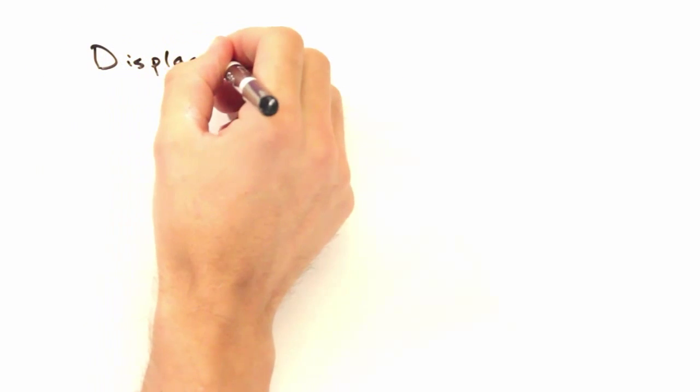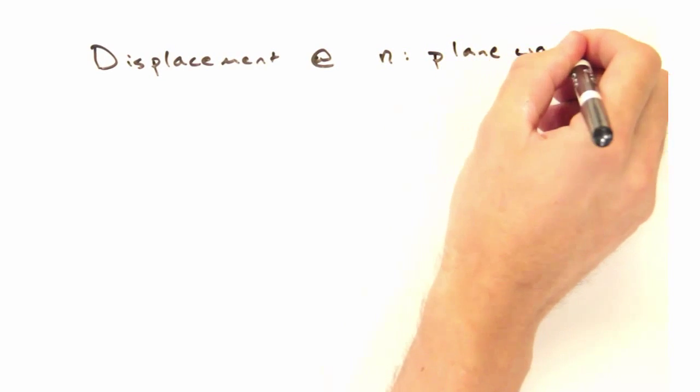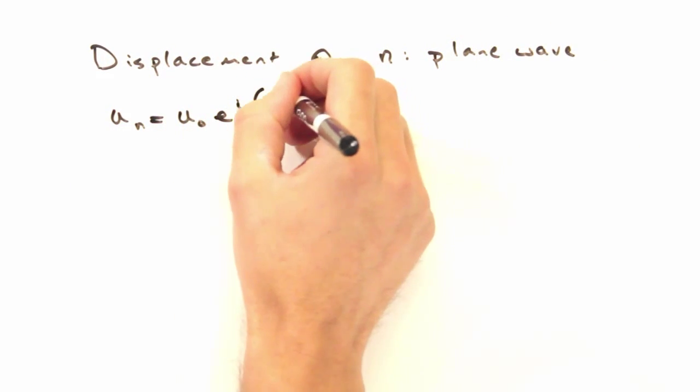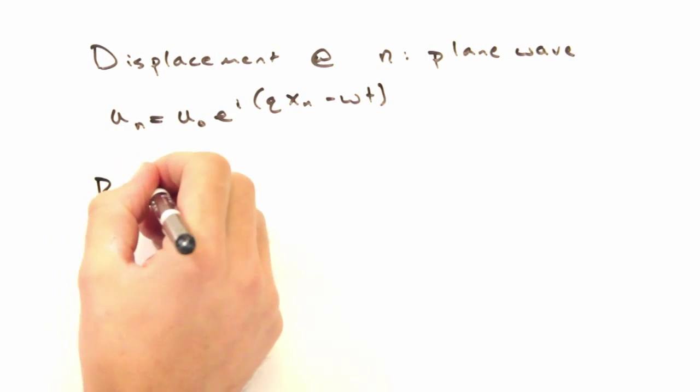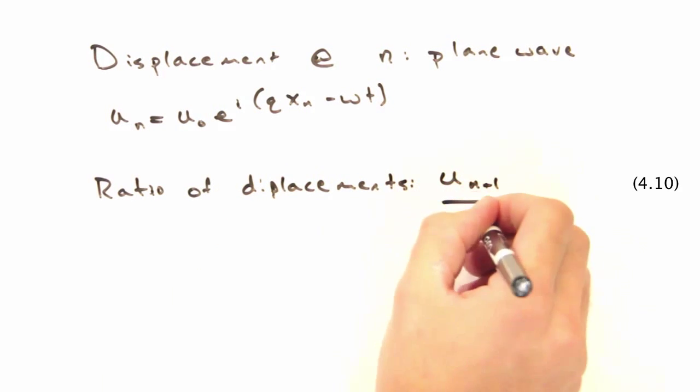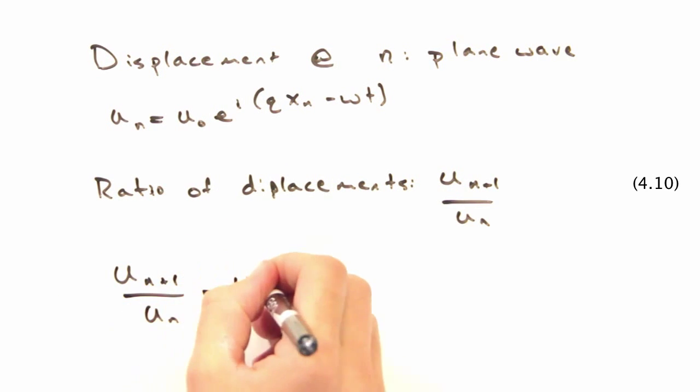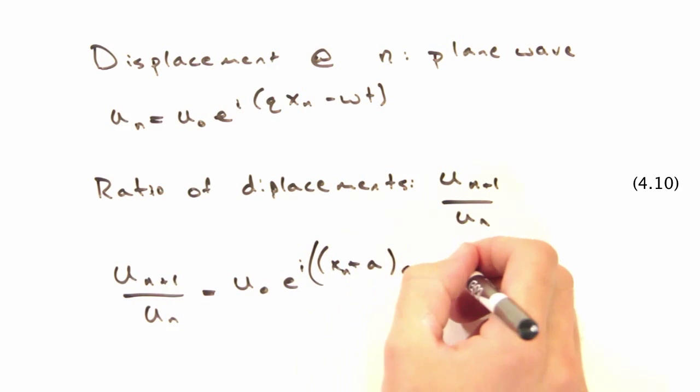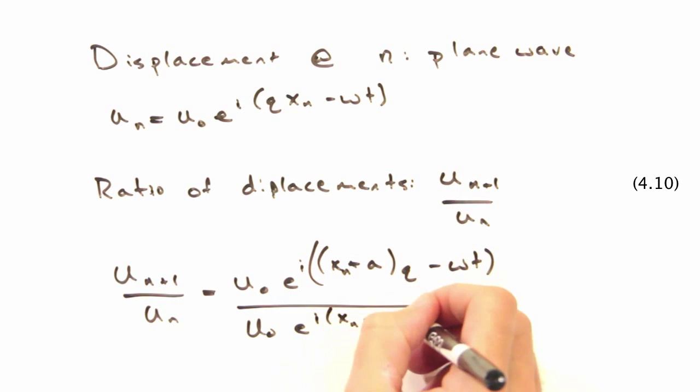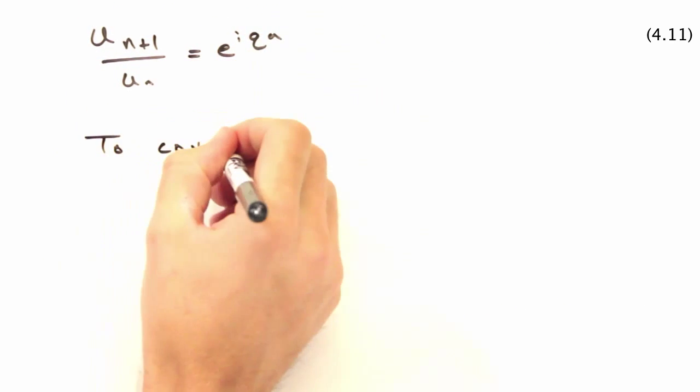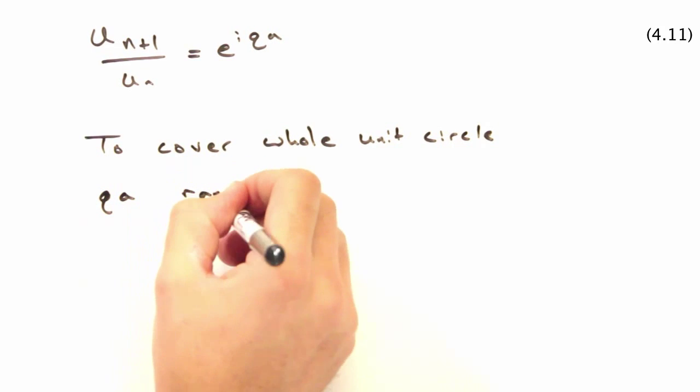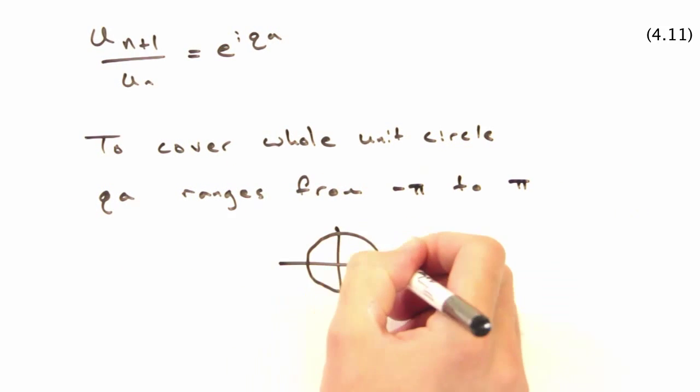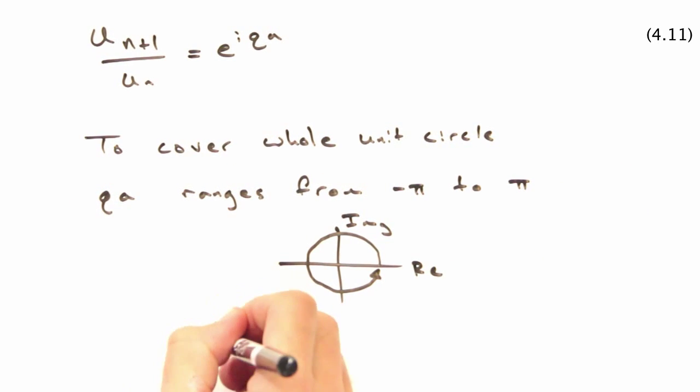Recall we defined our displacement for a particular atom at position n as a plane wave. Let's begin by looking at the ratio of displacements between atom n and its neighbor at position n plus 1. So after some cancelling, we end up with e to the i qa. And to cover the whole unit circle, qa would need to be between minus pi and pi. So q would be between minus pi over a and pi over a.